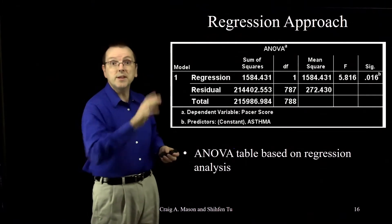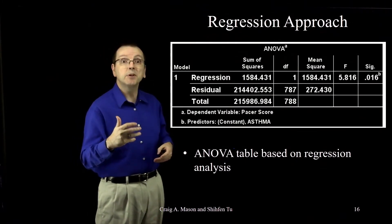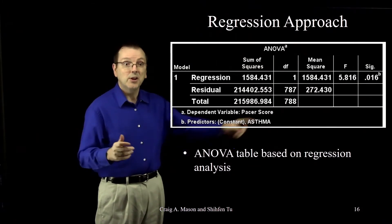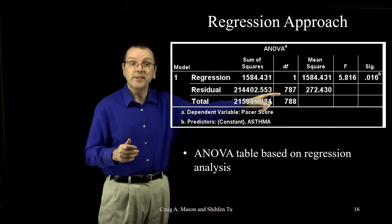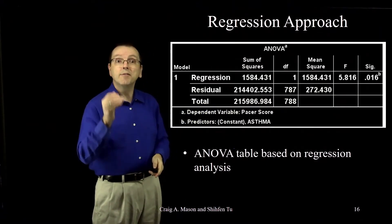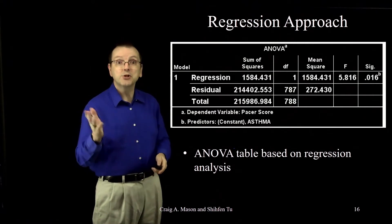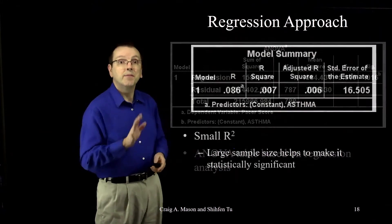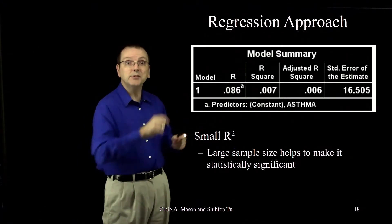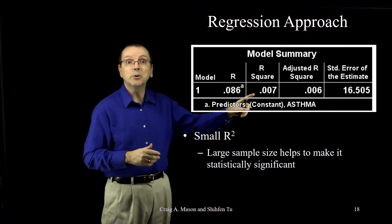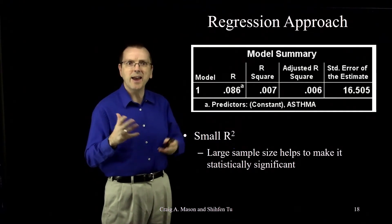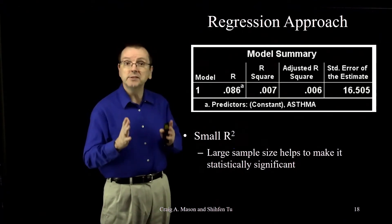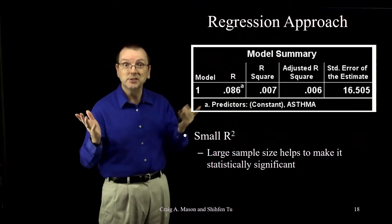Here's the ANOVA table for our regression, where I've entered asthma as the predictor of PACER scores. We have one predictor and 789 students. Our F with 1 and 787 degrees of freedom is equal to 5.816, which is statistically significant with a p of 0.016. The model summary table tells us that our R-squared is 0.007, so asthma status accounts for 0.7% of the variance in PACER scores.